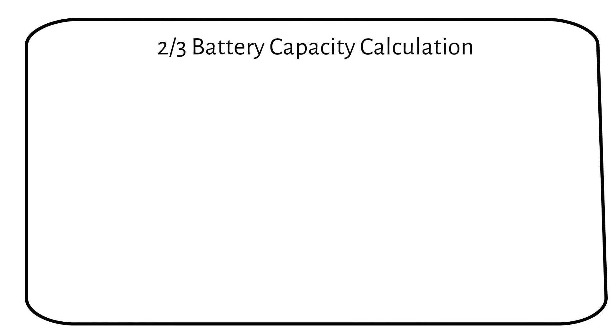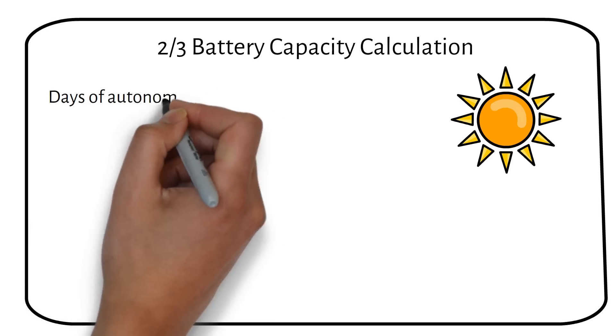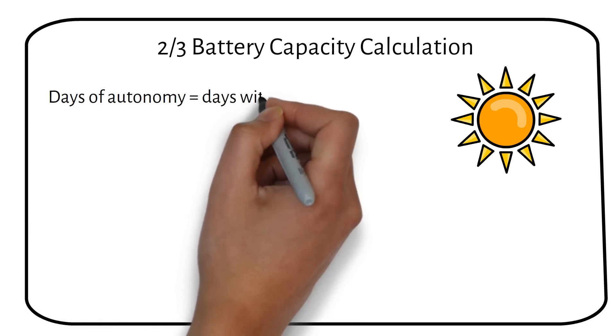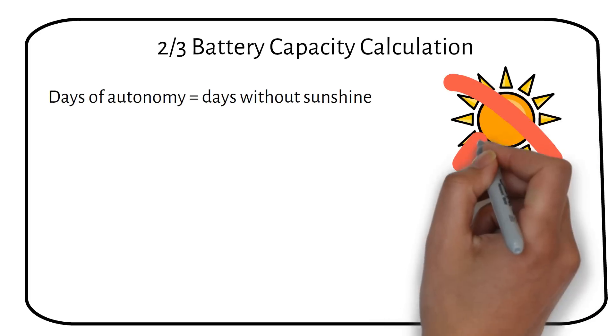In step 2, we must decide how many days of autonomy we want in our off-grid system. Normally, I size for 3 days. So you can still power the loads when the sun doesn't shine.